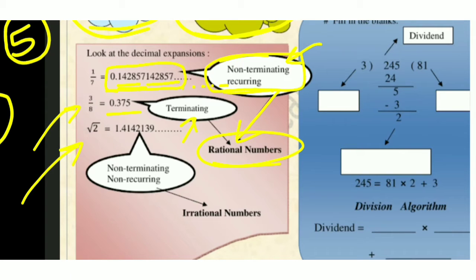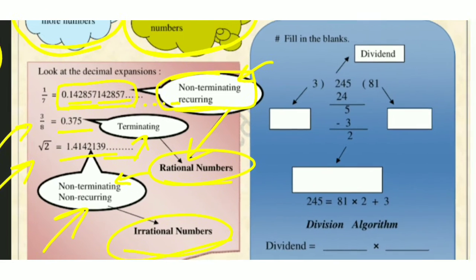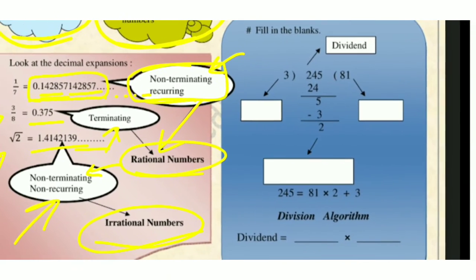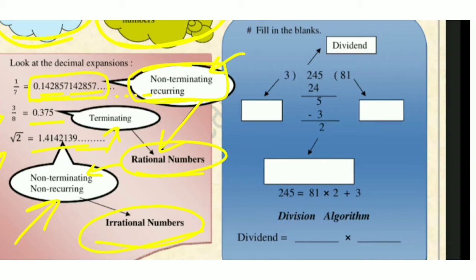Another example is √2, which equals 1.41421356... — the dots indicate it is non-terminating. But here there is no repeating group of digits, so it is non-recurring. Non-terminating and non-recurring decimal expansion means the number is irrational.